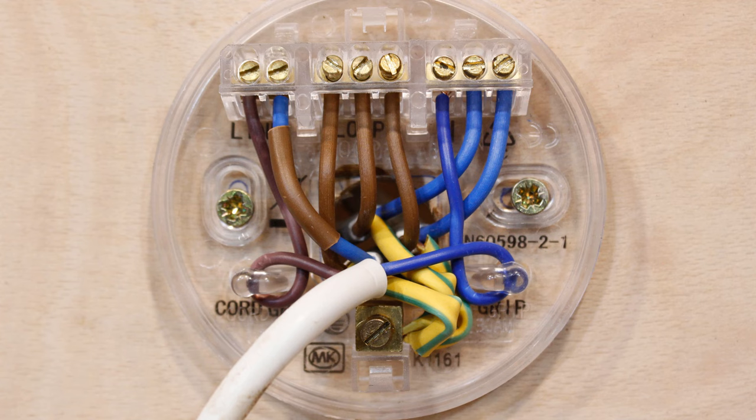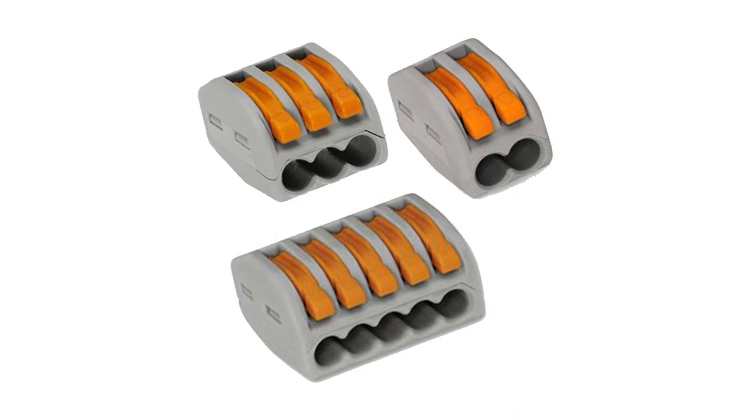Since we're replacing the functions of the old ceiling rose you do need some connector blocks to replace the old terminal blocks that were in the ceiling rose. I tend to use these WAGO connectors since they are easy to use and you can stuff them up into the ceiling to hide them and also comply with current UK regulations. You can get them in loads of places like eBay or where I tend to get them from is my second home at Screwfix.